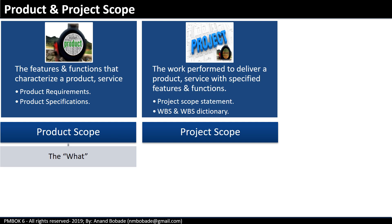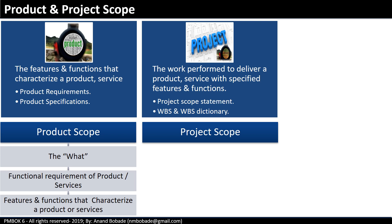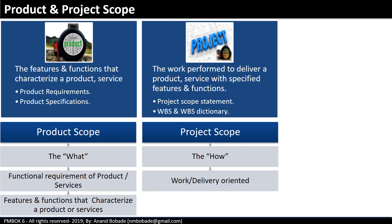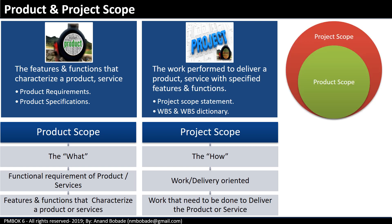Product scope addresses the question 'what' — what the customer wants. It refers to the functional requirements of a product or service, meaning the features and functions that characterize it. Project scope addresses the question 'how' — how the work will be delivered. It is delivery oriented and helps you as a PM to identify and document the activities or work that need to be done to deliver the product. Remember, product scope is a part of project scope.